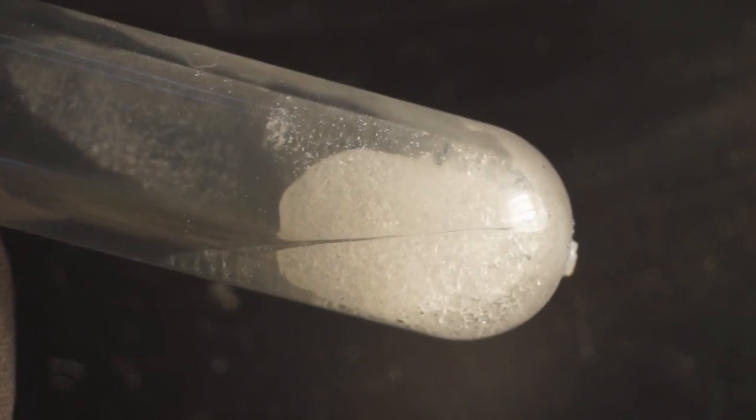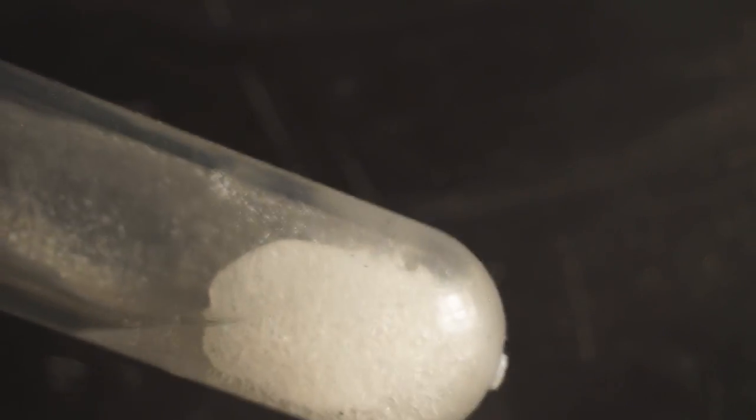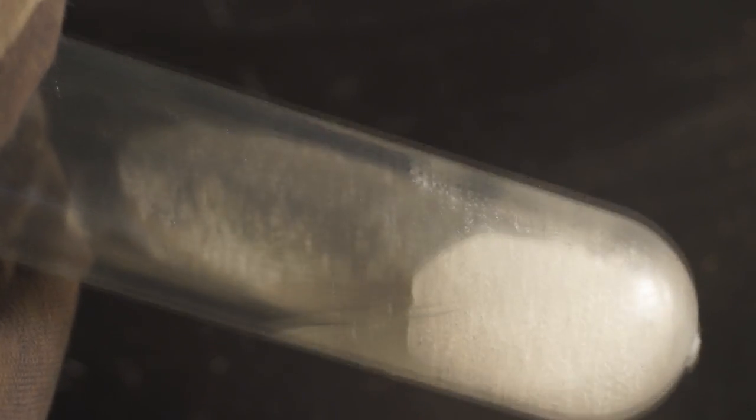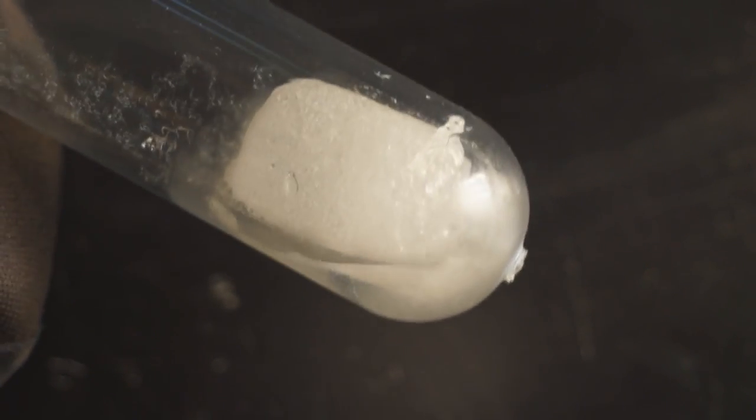As it warms up, the dry ice will sublime into a gas, which is carbon dioxide vapor, increasing the pressure. Once the pressure approaches 5 atmospheres, the carbon dioxide solid will start to melt and turn into carbon dioxide liquid.